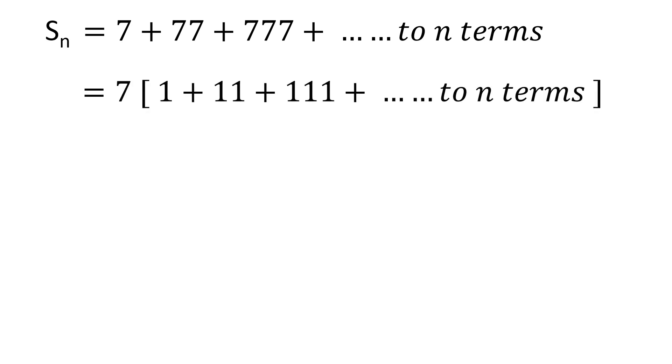Let us denote the sum of this series. The first step to solve this problem, that most of you must have done, is to factor out a 7 from each term. Now what we have in the square brackets is a similar series we started with. The only difference is, instead of 7s we have 1s now.